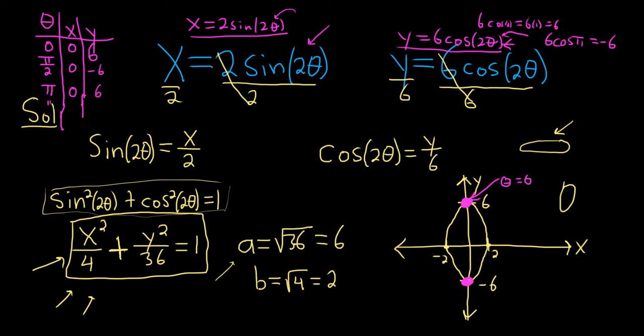So let's try something between 0 and pi over 2. Let's try plugging in pi over 4. If we plug in pi over 4, we get 2 times the sine of 2 times pi over 4. That's 2 times the sine of pi over 2. The sine of pi over 2 is 1. That puts us at 2. If we plug in pi over 4 into the y, we get 6 cosine 2 times pi over 4, which is pi over 2. Cosine of pi over 2 is 0, so all of this is 0. So now we know we are here.